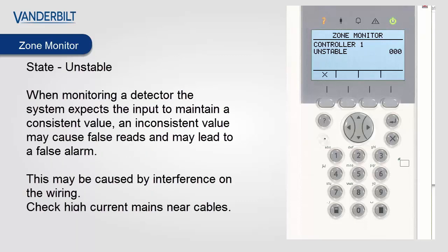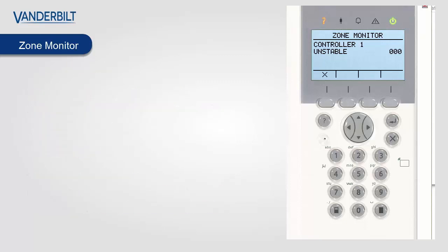Zone state unstable: when monitoring a detector the system expects the input to maintain a consistent value. An inconsistent value may cause false reads and may lead to a false alarm. This may be interference on the wiring — check for high-current mains near the cable or any other interference sources.